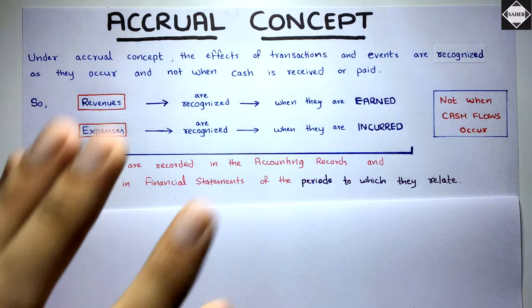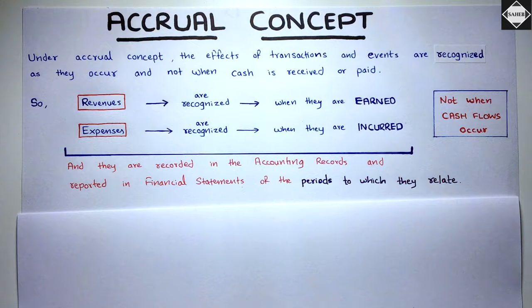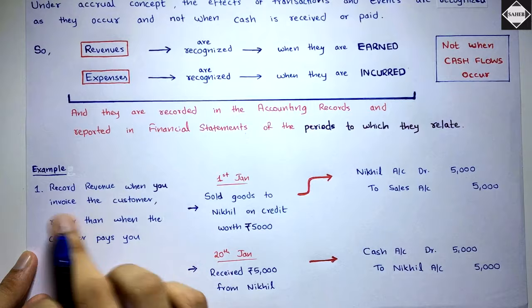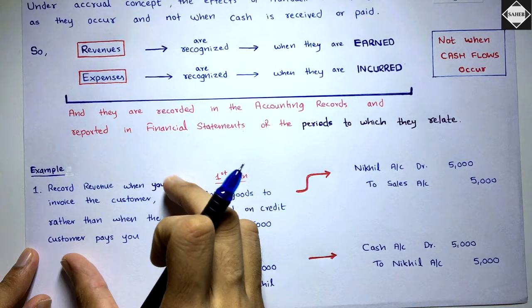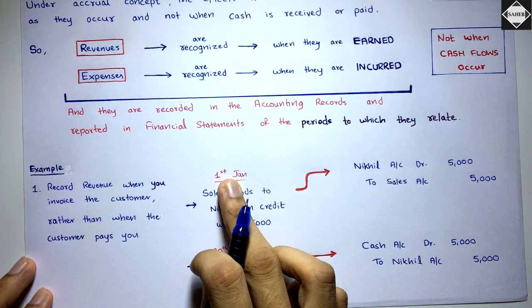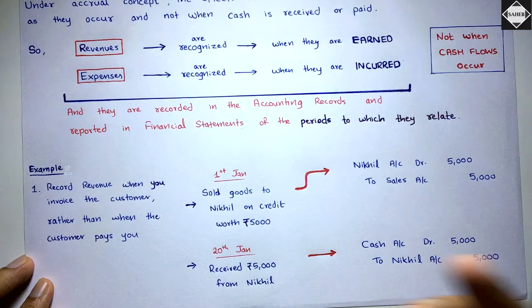The accrual concept says: whatever has happened, just record that in the accounting records, and it will be reflected in the financial statements. Now let's see a revenue example. Record revenue when you invoice the customer, rather than when the customer pays you. This is an example of the accrual concept being followed. On 4th January, let's say you sold goods to Mr. Nickel on credit worth five thousand rupees.